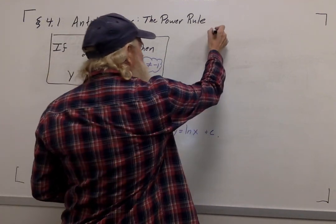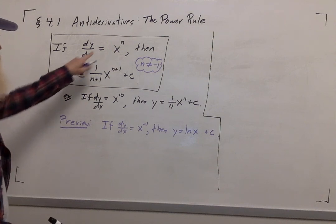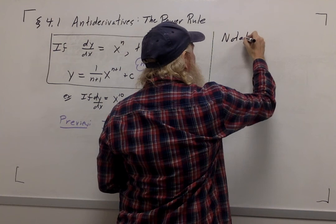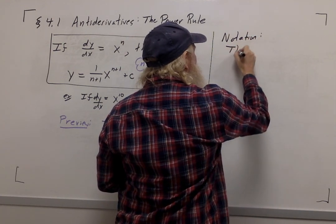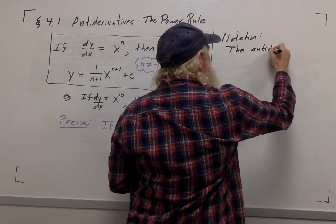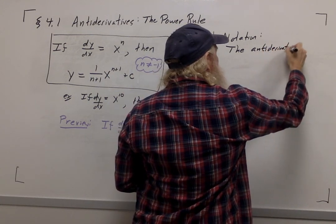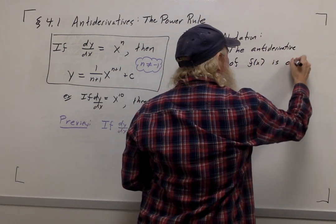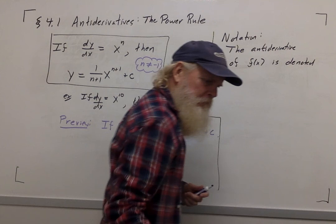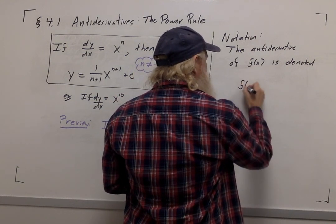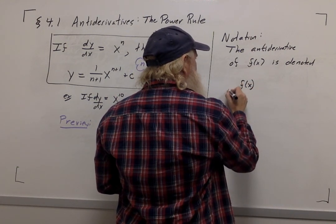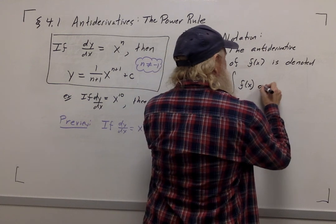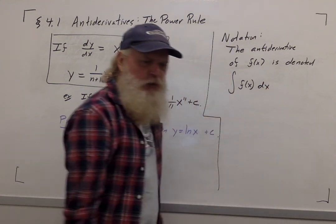Now, here's some notation that we're going to use for anti-derivatives. So far, we've had to write sentences like this. The anti-derivative of a function f of x is denoted this way. You write f of x. You get what you might recognize as an integral sign in front. And you write dx afterward.